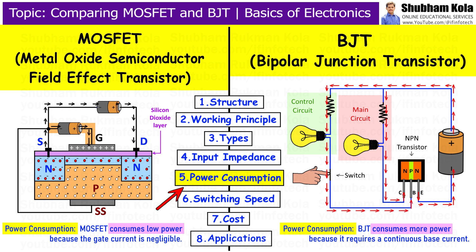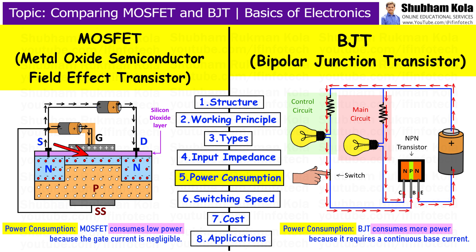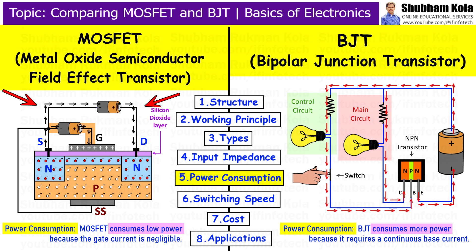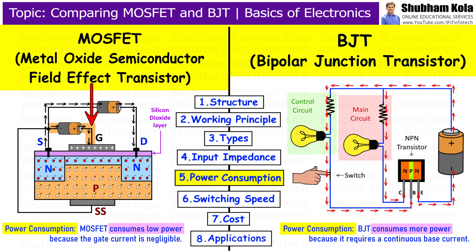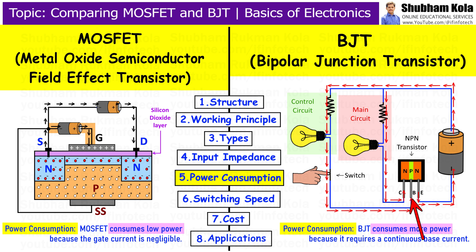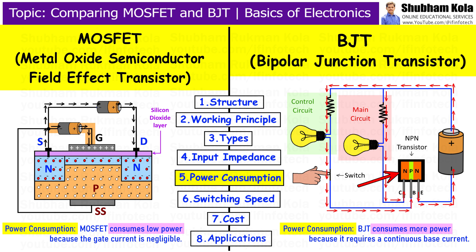Next is power consumption. Looking at power consumption, MOSFETs and BJTs behave differently due to their operating principles. MOSFETs generally consume less power because the gate current is negligible. The power consumed by a MOSFET is due to the current that flows between the source and drain, with very little power loss in the gate circuit. However, BJTs consume more power as they require a continuous base current to operate. The current at the base must be supplied in steady state, which adds to overall power consumption, as BJTs are current-driven devices.